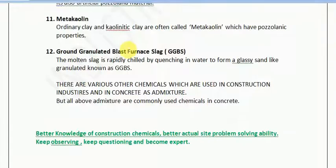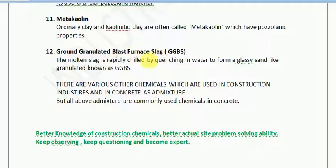Another artificial admixture is ground granulated blast furnace slag, or GGBS. The molten slag is rapidly chilled by quenching in water to form a glassy, sand-like granulated material known as GGBS. In steel and various other industries, furnaces produce waste slag material, and when this is powdered it is known as GGBS. There are various other chemicals used in construction as admixtures, but all of the above admixtures are commonly used in the concrete industry. You must review the web module to understand these artificial admixtures, their use, and their availability, as this knowledge can help you save lots of money while practicing civil engineering.